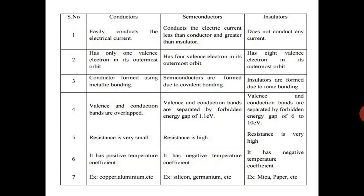And third one, conductors form using metallic bonding. Semiconductors are formed due to the covalent bonding. And insulators are formed due to ionic bonding. In conductor, there is metallic bonding. Semiconductor, there is covalent bonding means sharing the electrons. And in insulator, there is ionic bonding.